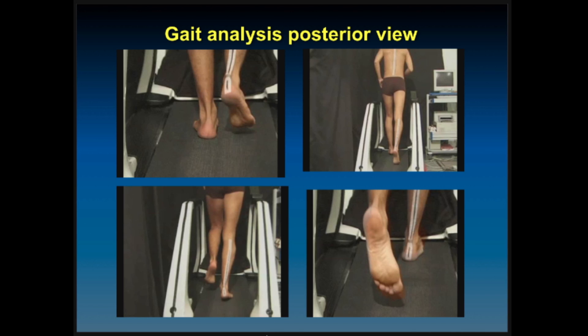Observation of gait by walking and running is very effective. Gait analysis in a gait lab is even more effective, but therapists and athletic trainers can certainly look at gait on a simple treadmill and videotape this to get feedback back to patients and athletes.